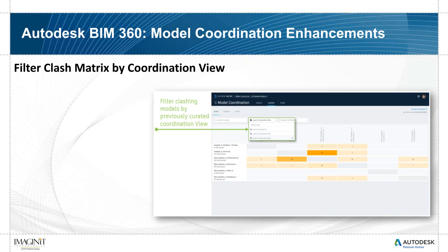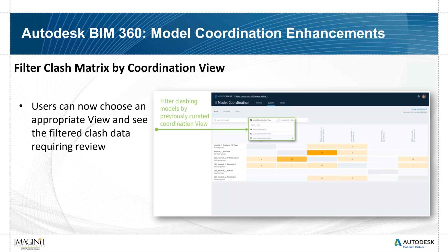The first enhancement is the ability to filter the clash matrix. This was already a useful tool — it showed a heat map where darker colors meant more clashes between different models. But it was still hard to find specific clashes; you'd have to run your eye down the left side to find the structural model, then across the bottom to find the MEP model. Now you can choose an appropriate view or pick specific models to see the heat map for.